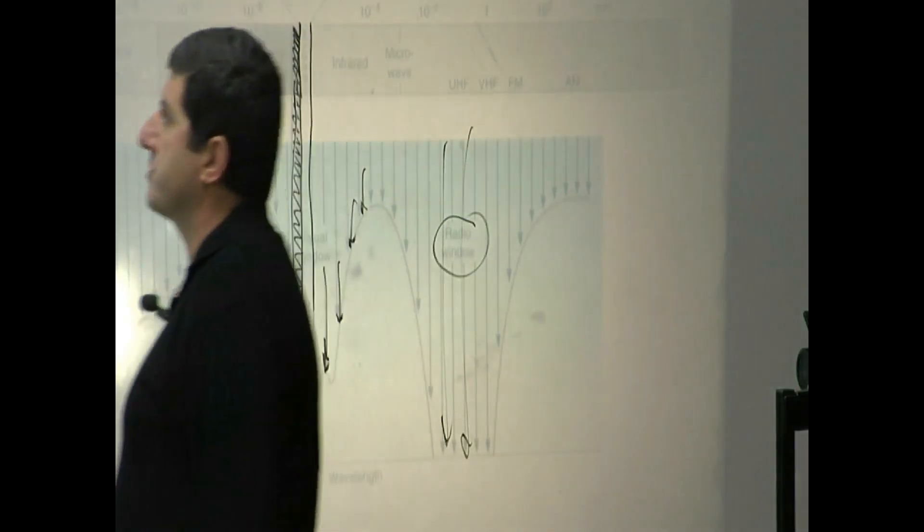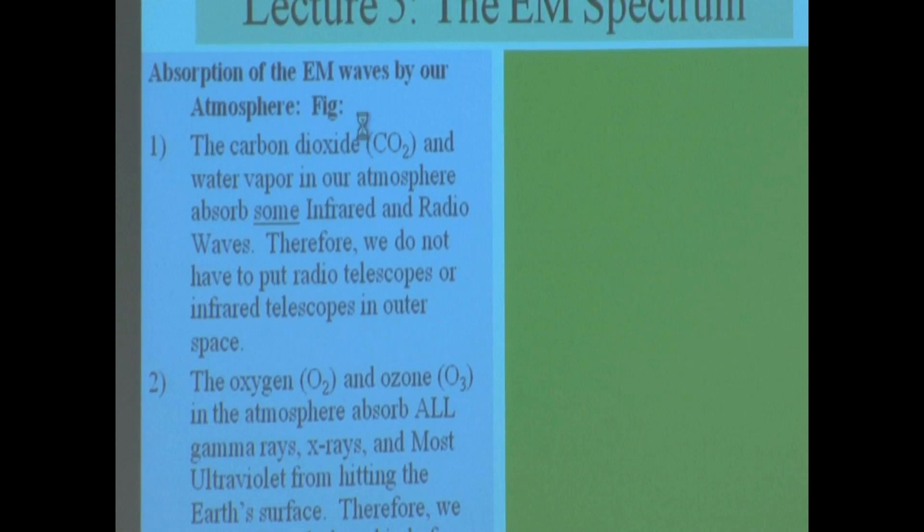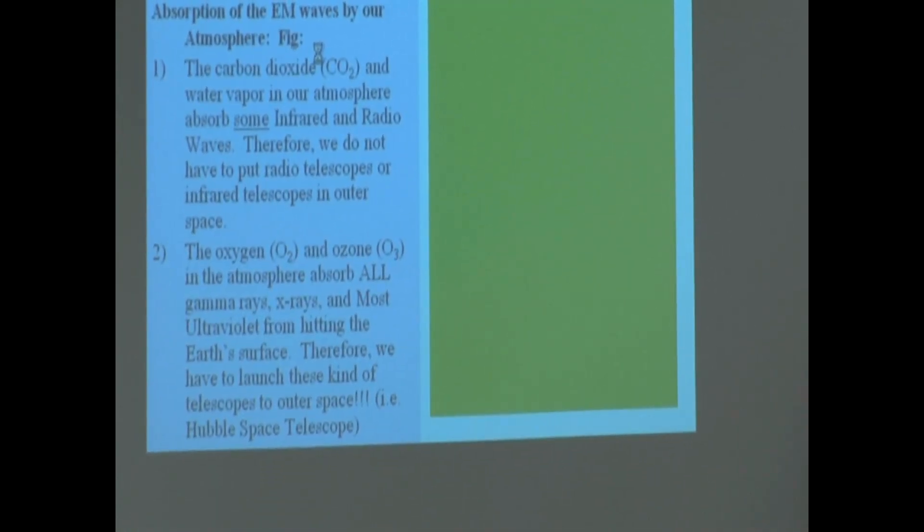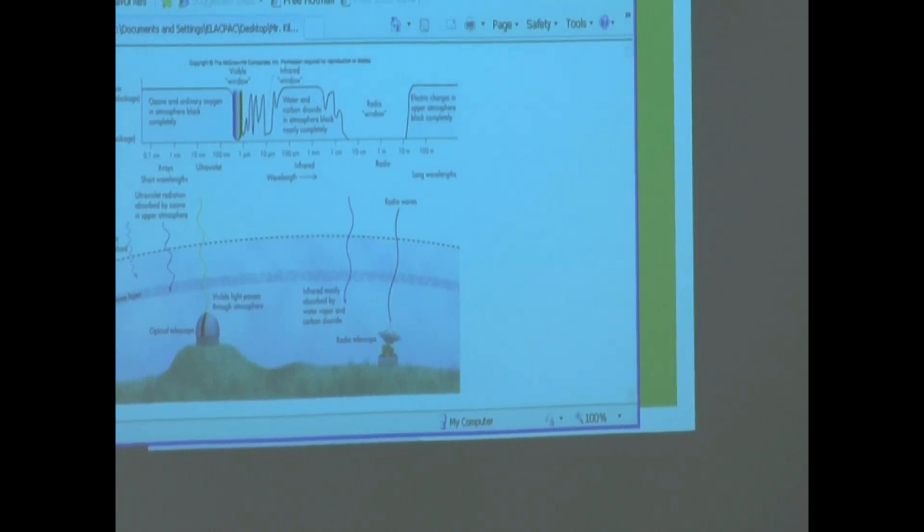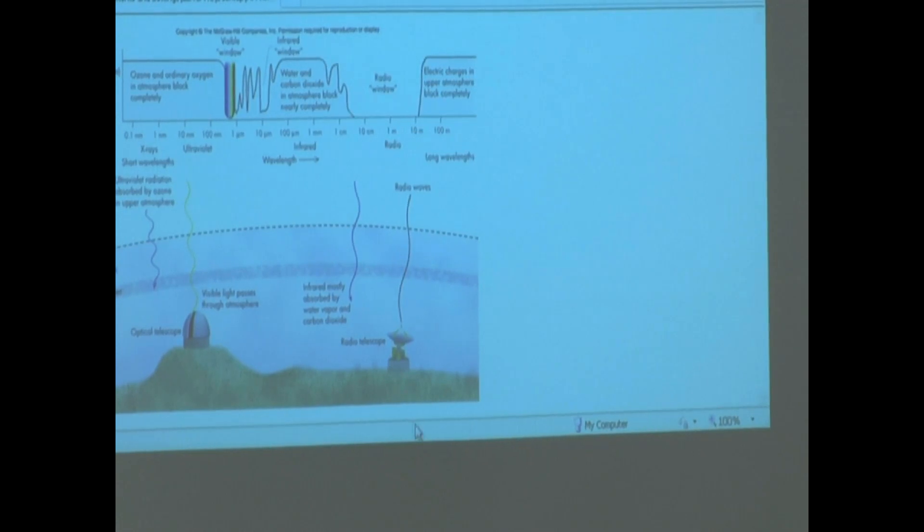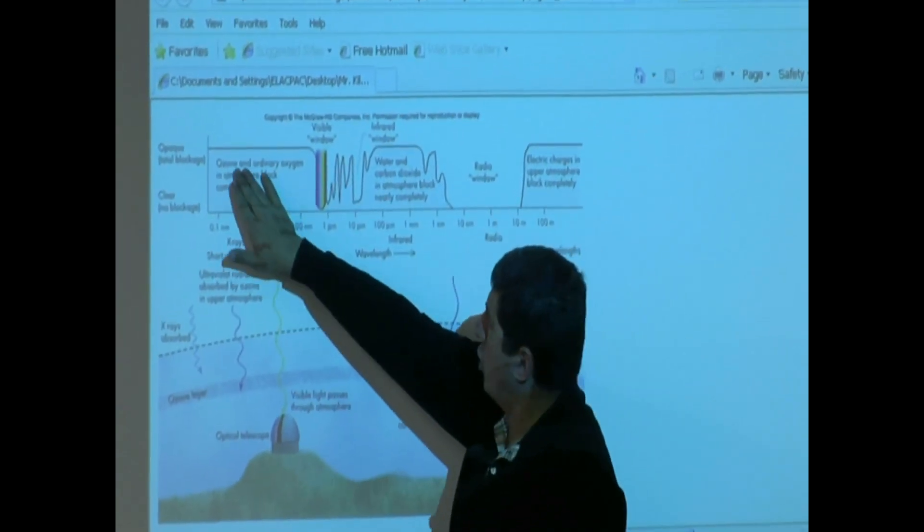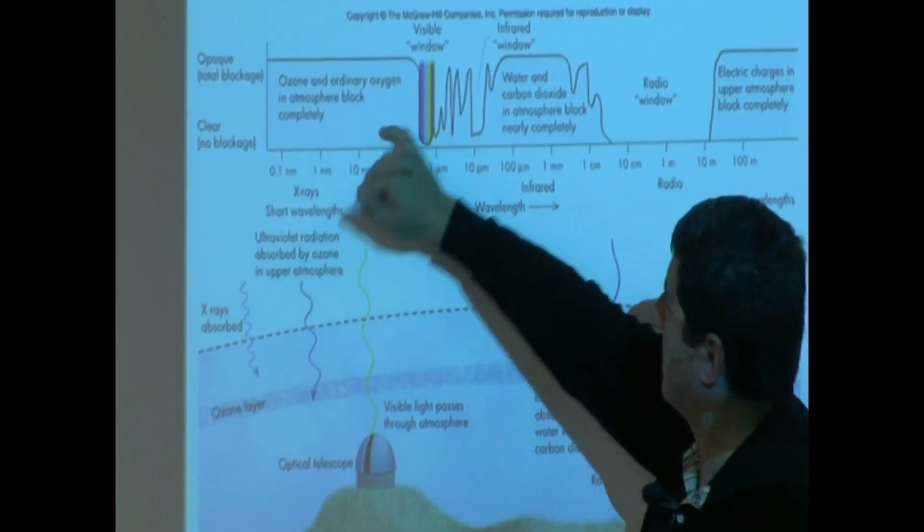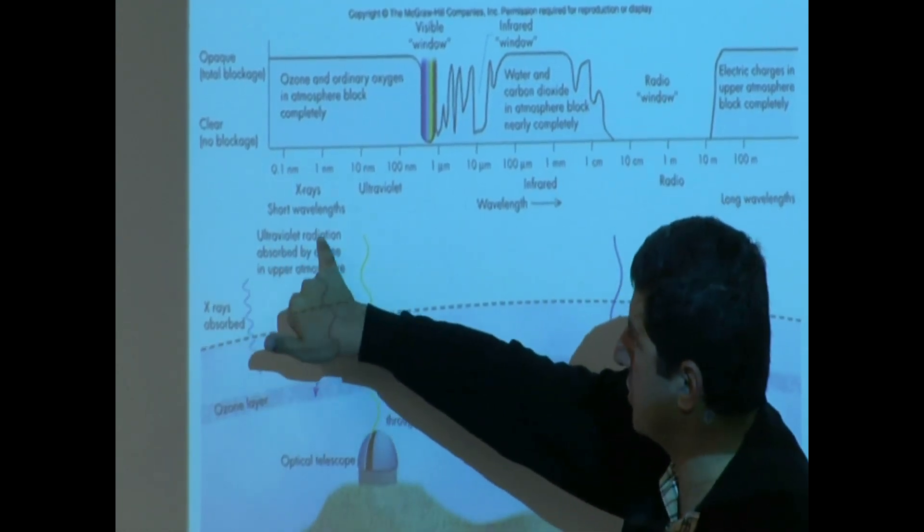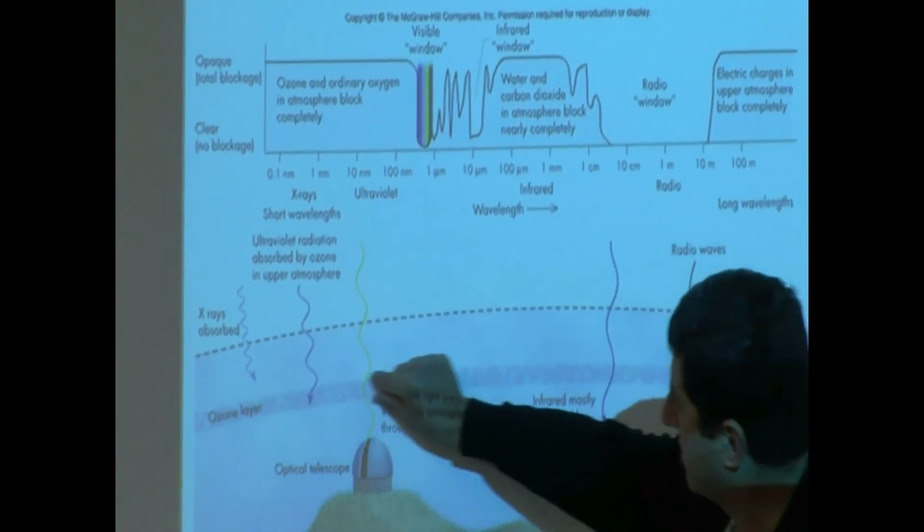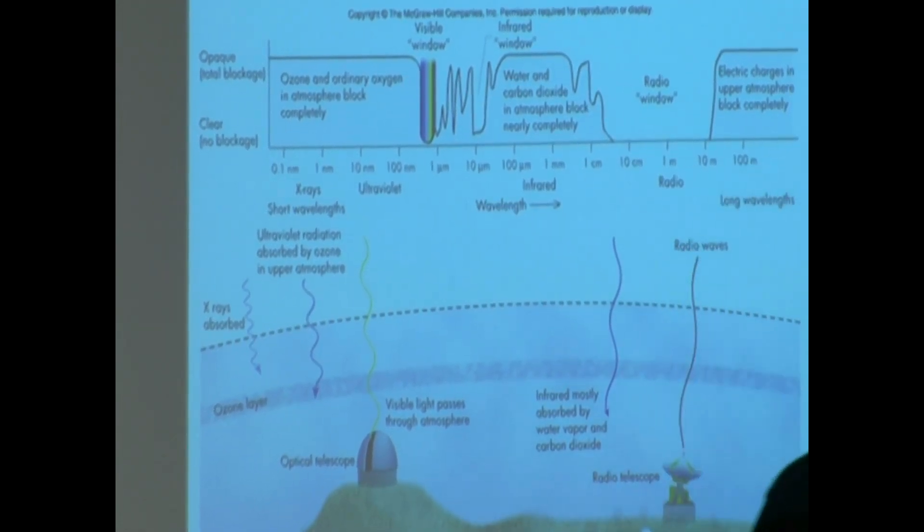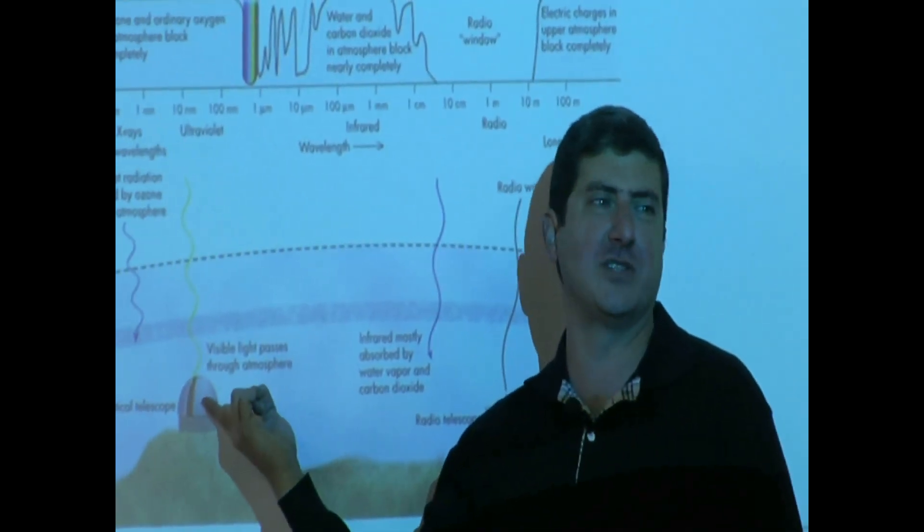Another way to visualize this picture is this one here. Same thing, but a different way of visualizing this. So you see here, it says, the ozone and the ordinary oxygen in the atmosphere block completely. Which region? The X-ray, the ultraviolet. This region is almost completely blocked. A little bit of the ultraviolet makes it through. So you see, ultraviolet radiation absorbed by ozone in the upper atmosphere. You see, here's the ozone layer. It's absorbed right there. Visible makes it all the way through. So in terms of telescope, what does that mean? This optical telescope that are intended for visible region, you can keep it here on Earth. You don't have to send it to outer space.